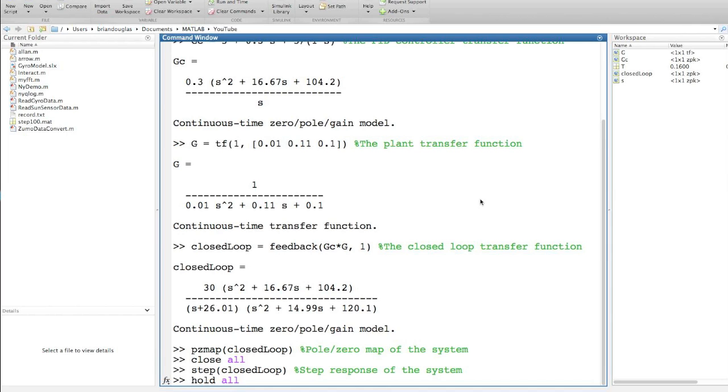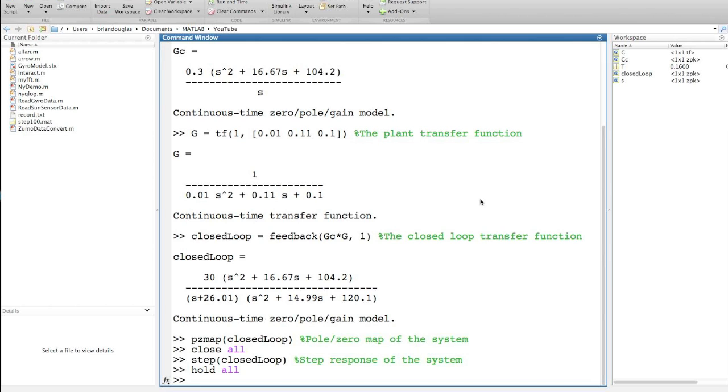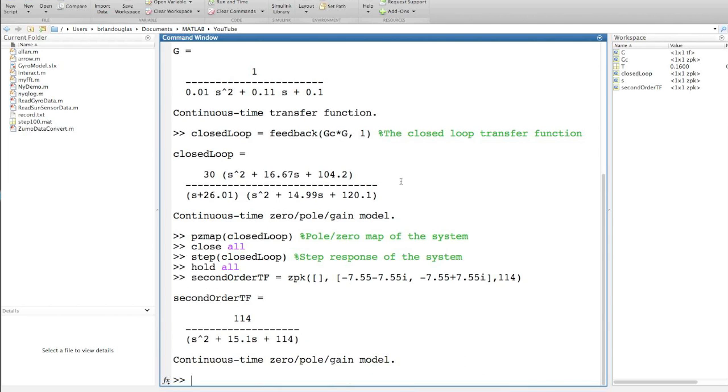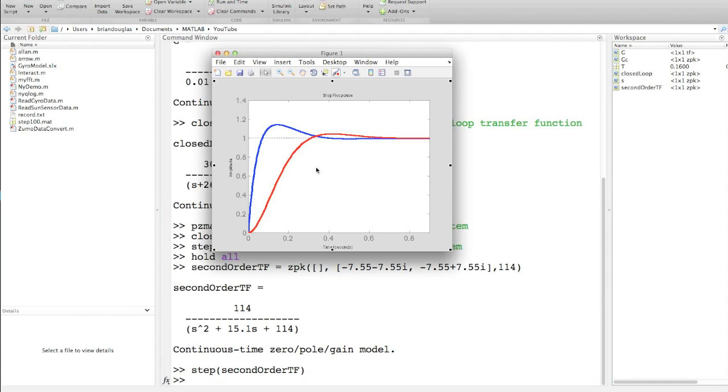And finally, the last thing I want to show you is how this system compares against a second order system with the same natural frequency and damping ratio as the dominant poles in our system. Here I define a second order system with two poles at minus 7.55, plus or minus 7.55i, and with a gain of 114. And I'll plot the step response on top of our existing response. And you can see that they're not exactly the same, and that's because our system was a third order system, and we had two zeros as well, which will affect the shape of the response.